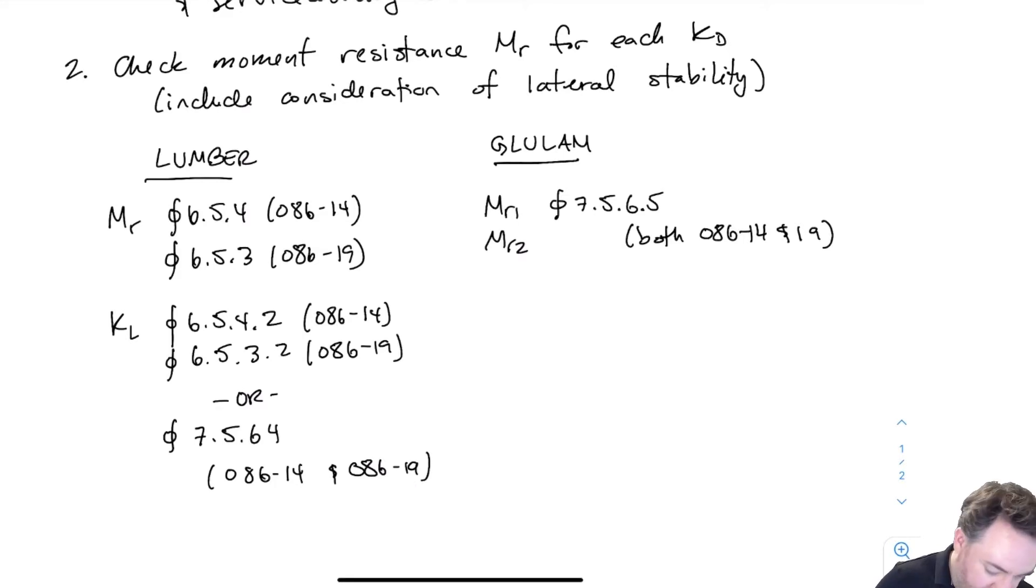On the glulam side, my KL check is only that same clause. And that is basically it for a moment resistance check. So pretty straightforward. Moving on to shear resistance.